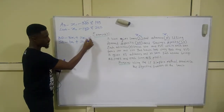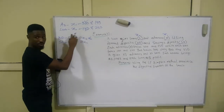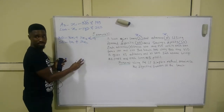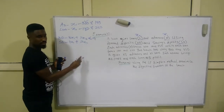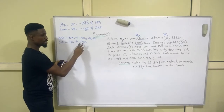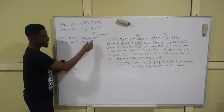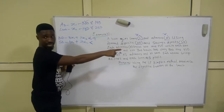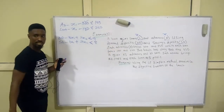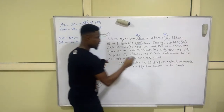The summation for the DD constraint should give you less than or equal to nine — that's the maximum DD the bank can give. The summation for the SD constraint gives you less than or equal to eight.